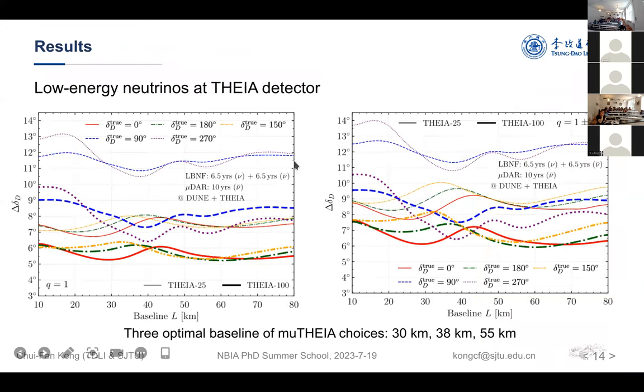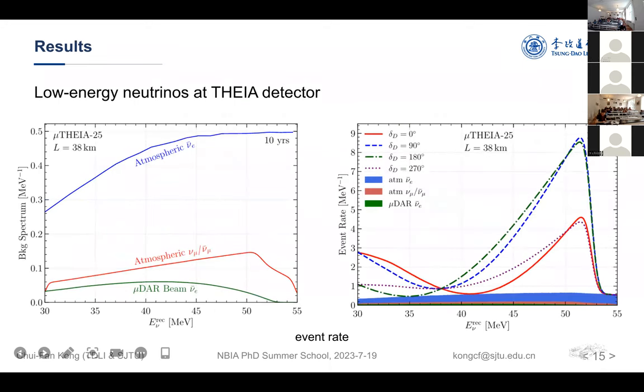This is results from our simulation. This is low-energy neutrinos for the THEIA detector. We needed to first choose some optimal baselines for the muon decay at rest. We have calculated the CP sensitivity. We found that there are several local minima for the CP sensitivity. We finally choose these three baselines as the optimal choice. This is the event rate for the low-energy neutrinos detected at THEIA detector.